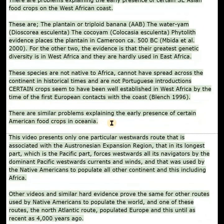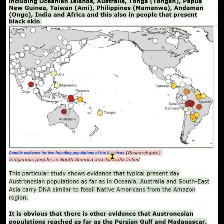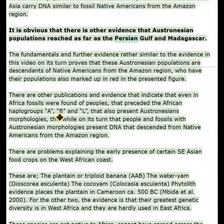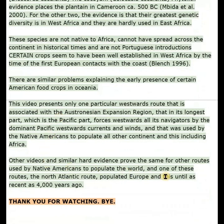There are similar problems explaining the early presence of certain American food crops in Oceania. This video presents only one particular westwards route associated with the Austronesian expansion region, which in its longest Pacific part forces westwards all its navigators by the dominant Pacific westwards currents and winds, and that was used by Native Americans to populate all other continents, including Africa. Other videos and similar hard evidence prove the same for other routes used by Native Americans to populate the world, and one of these routes, the North Atlantic route, populated Europe, and this until as recent as 4,000 years ago. Thank you for watching.